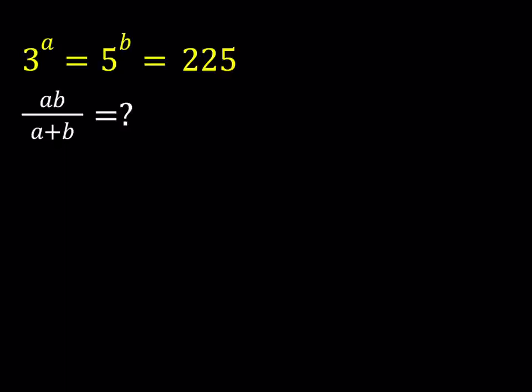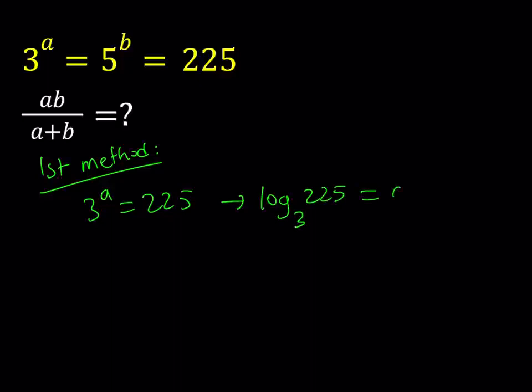I'm going to be presenting two methods. Let's start with the first method. For the first method I'm going to be using logarithms. When you have a variable in the exponent, it's pretty common that we use logarithms to write it. Since 3 to the power a is 225, by using the definition of logarithms I can write this as log base 3 of 225 is equal to a.